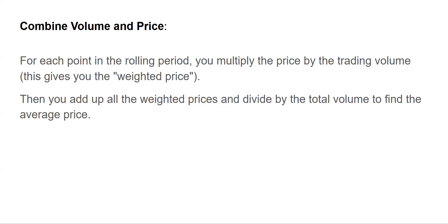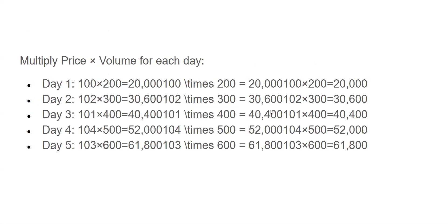Then you add up all the weighted prices and divide by the total volume to find the average price. That is how it has been calculated. For example, multiply price by volume for each day — or instead of each day, you can go for each 15-minute candle. That is an example of how it is calculated.